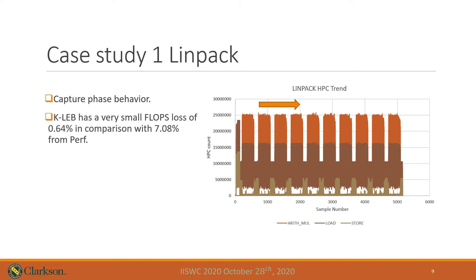We also compare the FLOPS number among other profiling tools to compare the performance loss when using each monitoring system. We achieve a very small performance loss of 0.64% when compared to Perf, which has a performance loss of 7.08%. This case study also shows that KLAB can generate time-series data samples non-intrusively where no source code is available, as LINPACK only provides a binary for the benchmark.